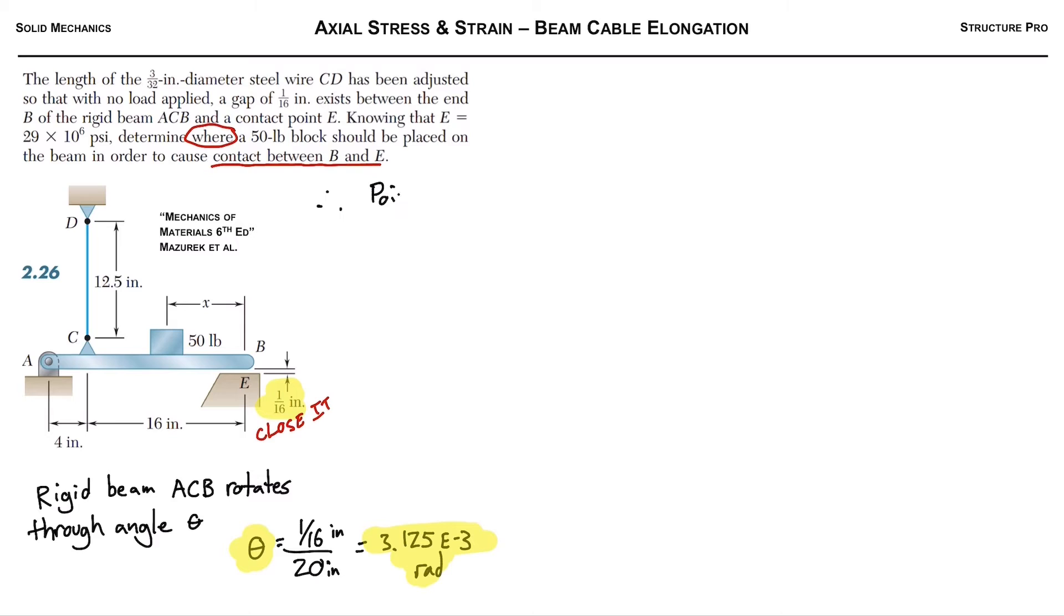Knowing this angle theta will allow us to calculate how much point C must move downwards, in other words how much the cable CD should elongate. Since theta equals opposite over adjacent, we can just times the adjacent side of the triangle by theta to get the opposite side. So delta C can just be calculated by 4 times theta, or 12.5 times 10 to the negative 3 inches.